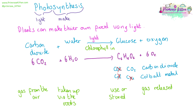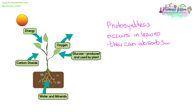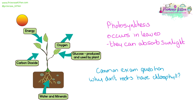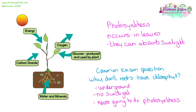This all happens in chlorophyll in the leaves. Chlorophyll is the green stuff in leaves. Photosynthesis occurs in leaves — they can absorb sunlight. A common exam question will refer to photosynthesis in roots. For example: why don't roots have chloroplasts, or why can't you see chloroplasts under a microscope, or why don't roots photosynthesize? They are underground — there is no sunlight. They are never going to do photosynthesis down there because they don't have chloroplasts and they don't have sunlight. Not all plant cells do photosynthesis — roots don't.